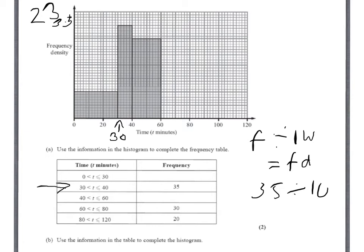And that enables us to see the frequency densities for the other parts of the graph. And we can also see that we're going up in units of 0.1s.